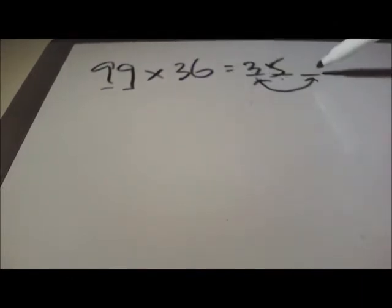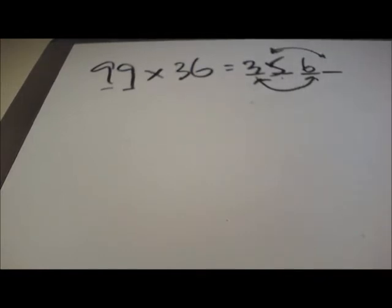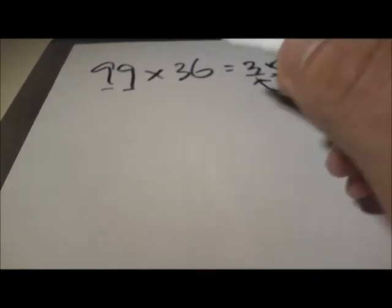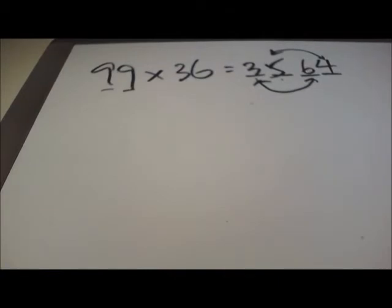So 3 plus something must be equal to 9, so this is 6. This also must be equal to 9, so this number before. So 99 times 36 is 3564.